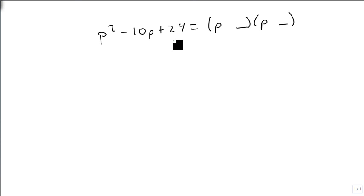We're going to take 24 and break it down: 1 and 24, 2 and 12, 3 and 8, 4 and 6. Those are all my factor pairs, but all of these add up to a positive.